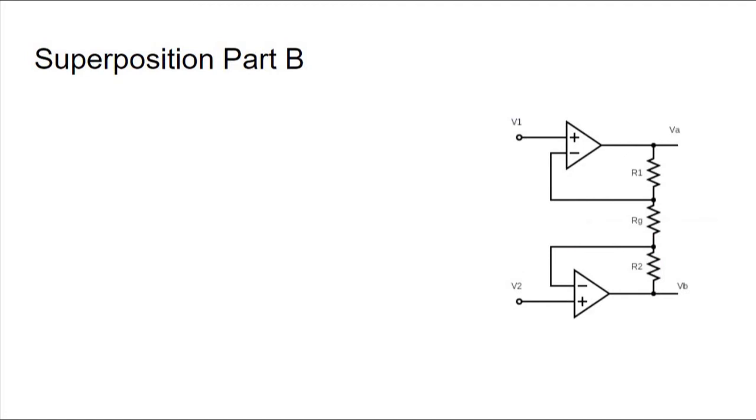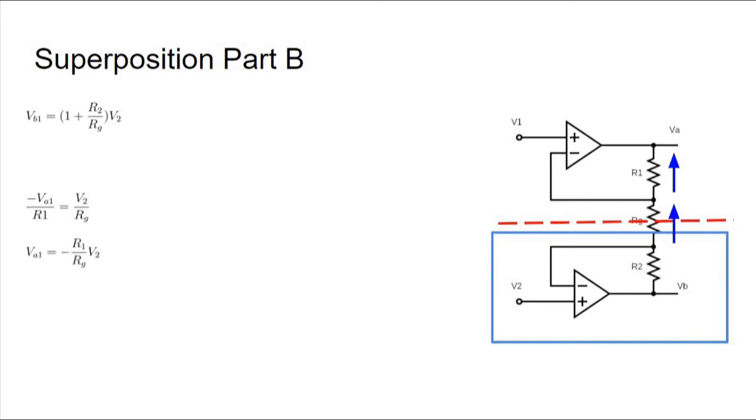Let's do the superposition for the second part. But we can notice something right away: this circuit is symmetrical about this line, so we would have very similar equations and derivations. First, we will notice again that this is a non-inverting amplifier, so our equation becomes Vb equals the quantity 1 plus R2 over RG all times V2. Finding Va should be similar to before. We'll use the currents. The current going through RG should equal the current going through R1. Using Ohm's law again, negative Va1 divided by R1 equals V2 divided by RG.